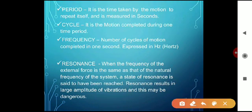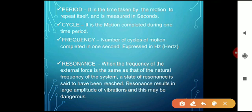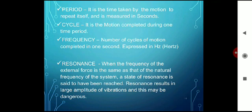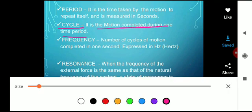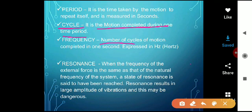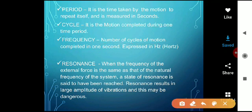These are some important terms for your G2 exam. The first term is period: it is the time taken by the motion to repeat itself, measured in seconds. The second term is cycle: it is the motion completed during one time period. The third term is frequency: the number of cycles of motion completed in one second. Its unit is Hertz.